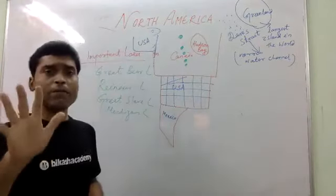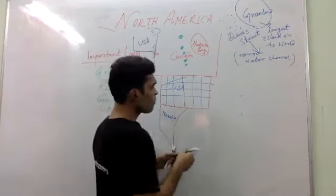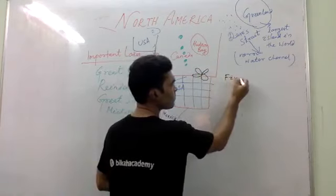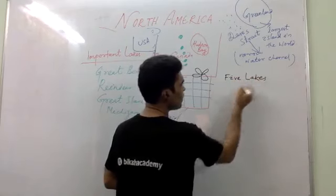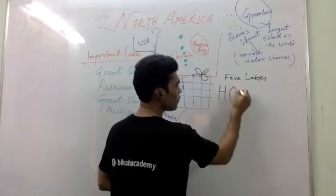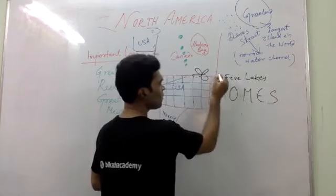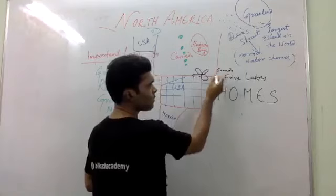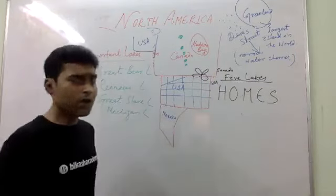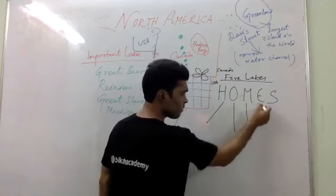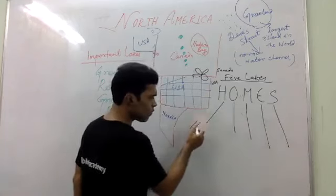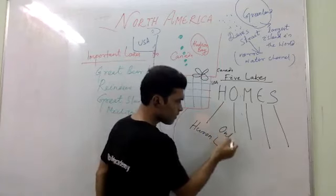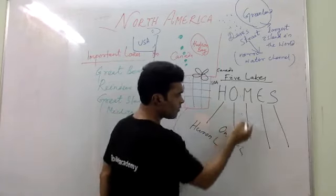Apart from those lakes, there are five beautiful lakes — just like a flower. Here, between Canada and USA, five lakes are present. We call these HOMES: H-O-M-E-S. H stands for Huron Lake, O stands for Ontario Lake, and M stands for Michigan Lake.